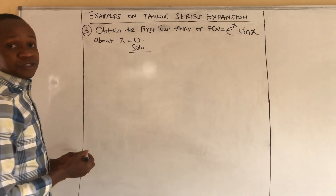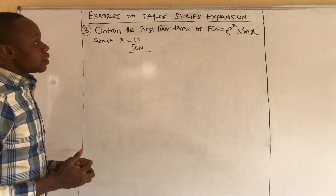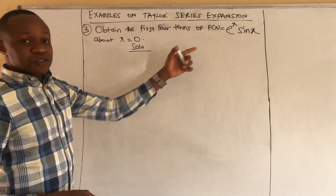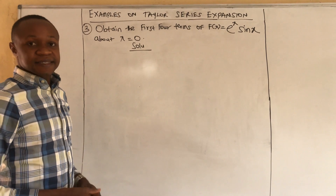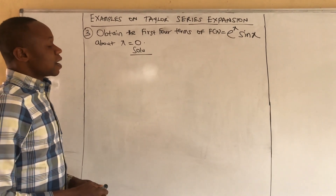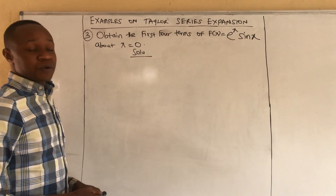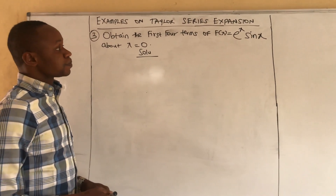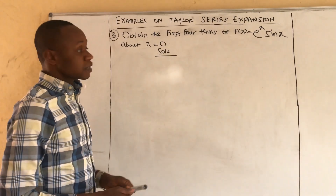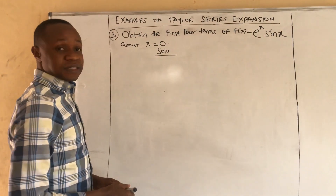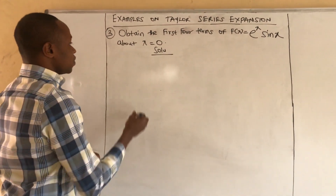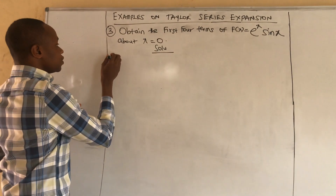We have the third question: obtain the first four terms of exponential x times sine x about x equal to zero. That's the Taylor series expansion of the function about x equal to zero. We already know the Taylor series for exponential x.